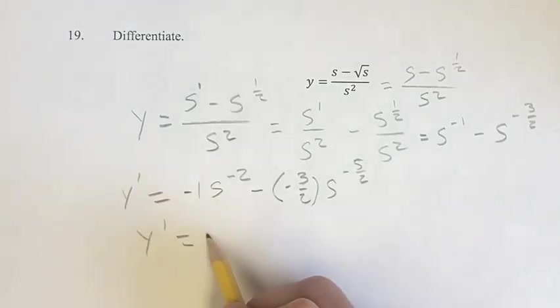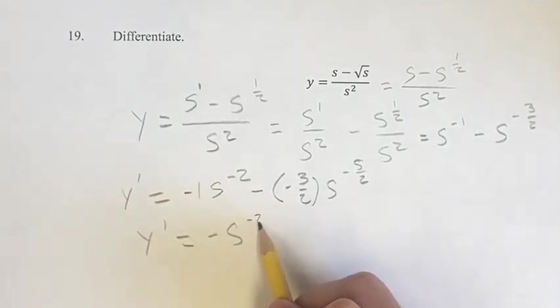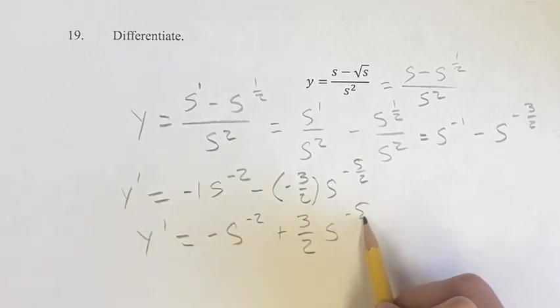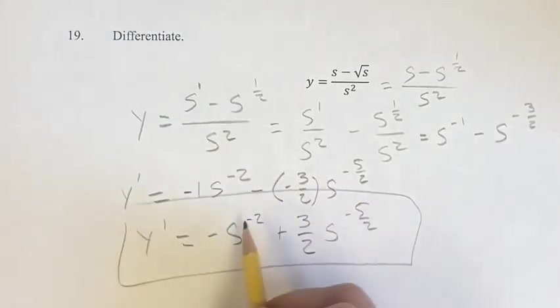And then just simplifying this out, we have negative s to the negative 2, plus 3 halves s to the negative 5 halves. And this is going to be your derivative.